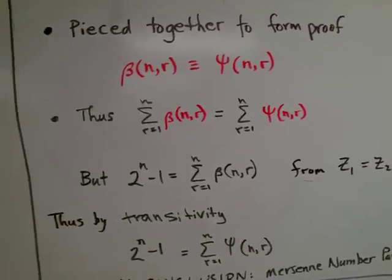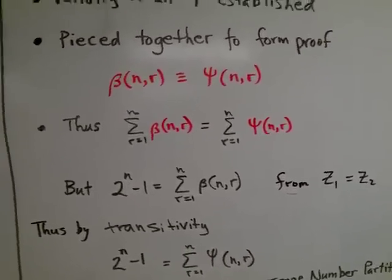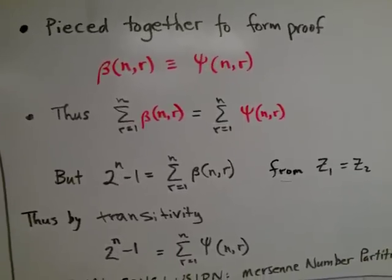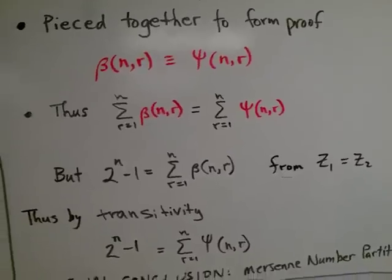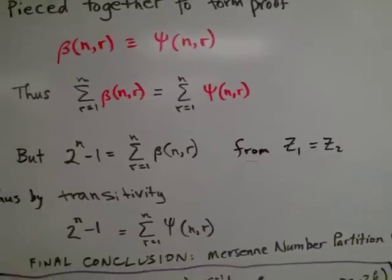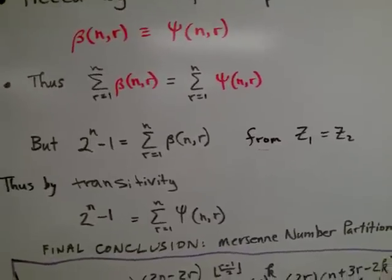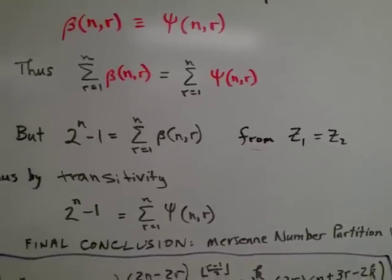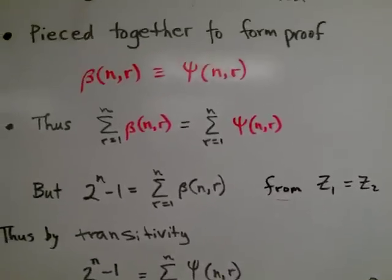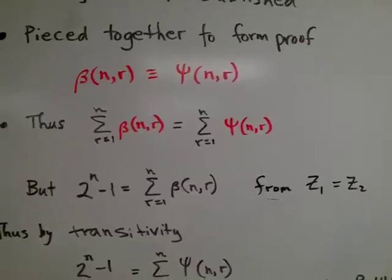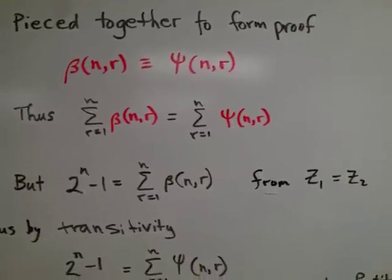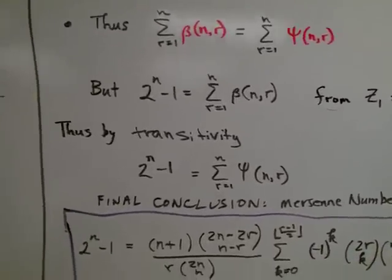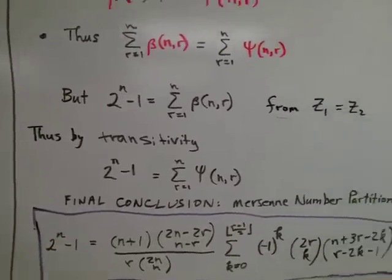And then, with that proof, I can sum each one of those expressions from r equals 1 to n and equate them. And from evaluating that z1 and z2, I know that the Mersenne structure is equal to the sum over beta. And then, with this sum over beta being equal to sum over psi using the lemmas, I can use transitivity and conclude that the Mersenne number is equal to the sum over psi.